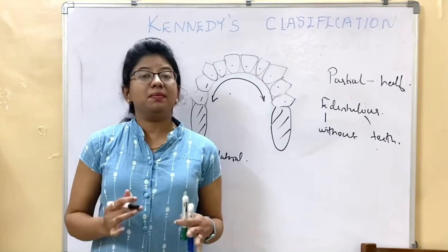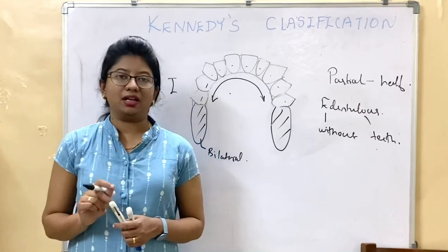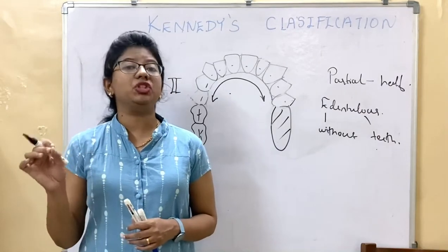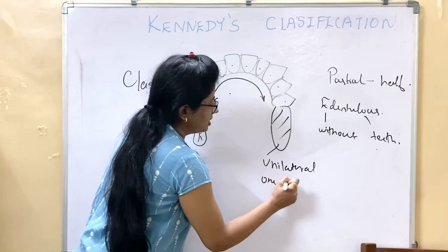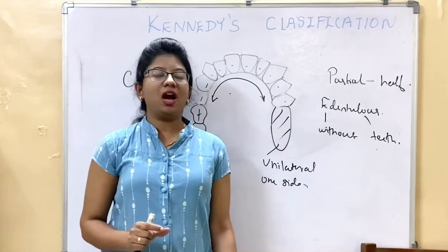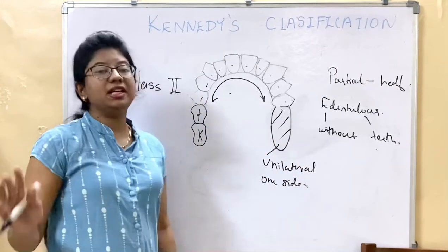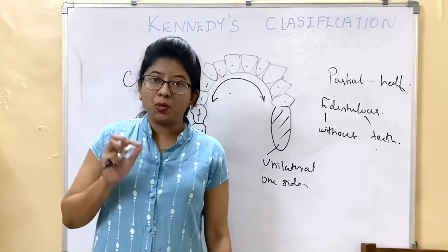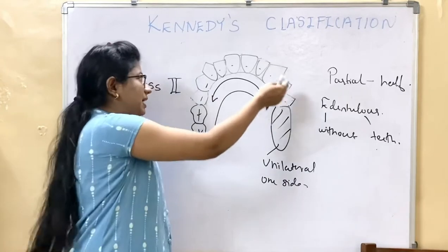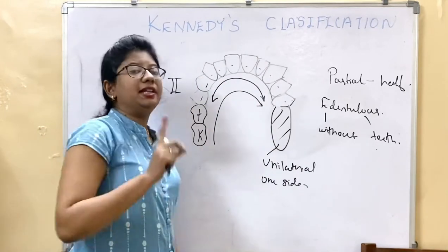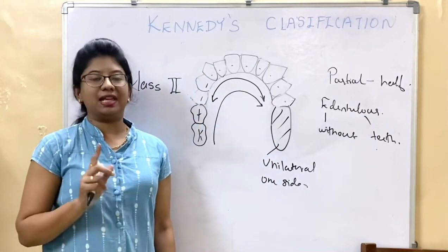In Class 2, it is similar to Class 1, but there is only one edentulous area. It says unilateral edentulous area — uni means one, lateral means side — so there is one edentulous area on either side. It includes a unilateral edentulous area present in the posterior region, with all teeth present anterior to it. That single edentulous space can be on the left side or the right side. That is Class 2.